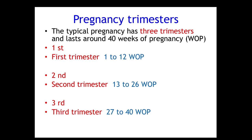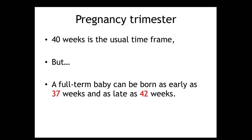Our third topic is pregnancy trimesters. A typical pregnancy has three trimesters lasting around 40 weeks. The first trimester spans weeks 1 to 12, the second trimester weeks 13 to 26, and the third trimester weeks 27 to 40. A full-term baby can be born as early as 37 weeks and as late as 42 weeks, so the full-term range is 37 to 42 weeks.